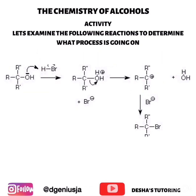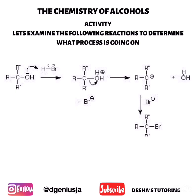Let's take a look at the reaction with hydrogen bromide and an alcohol. This is nucleophilic substitution — we can see that this is an SN1 reaction taking place, and we can clearly identify the nucleophile as the bromide ion.